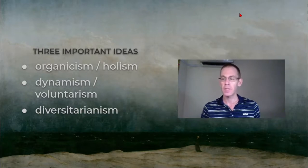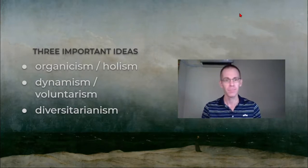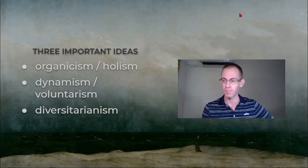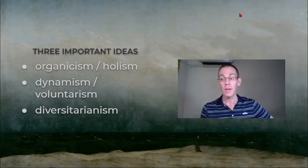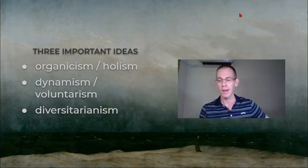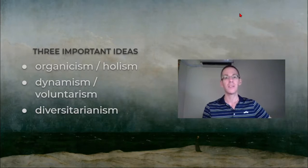I'll give the English names for the ideas that he gives: organicism or holism, dynamism or voluntarism, and diversitarianism. He had already examined romantic diversitarianism—the last one—he'd already talked about this a lot in his book 'The Great Chain of Being.' Let's look at each of these a little bit.